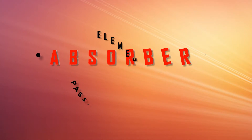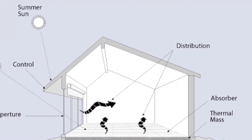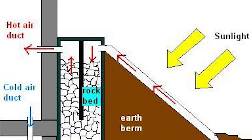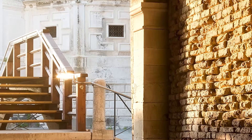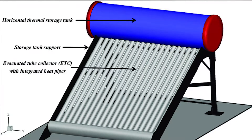Number two: Absorber. The absorber is the hot darkened surface of the storage element. The surface sits in a direct path of the sunlight, and the sunlight heats the surface and it's absorbed as heat. For example, a masonry wall, a floor, or a water container.